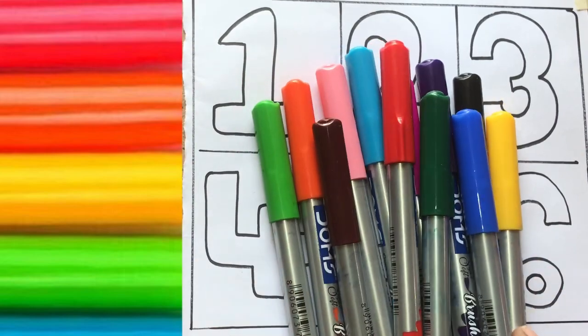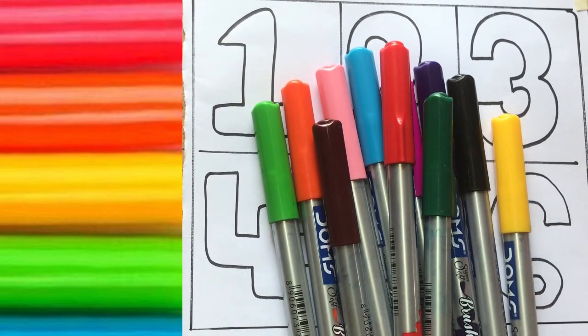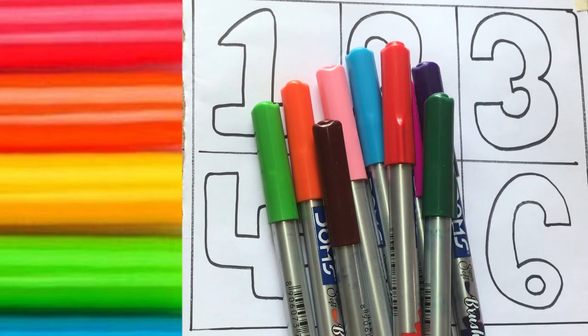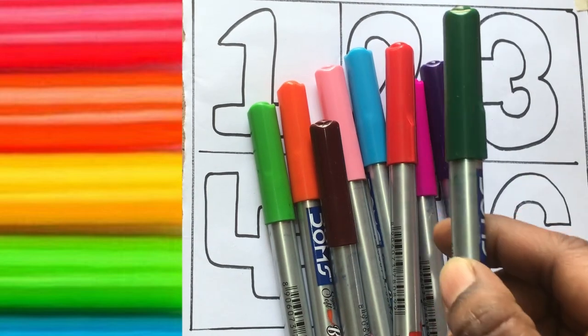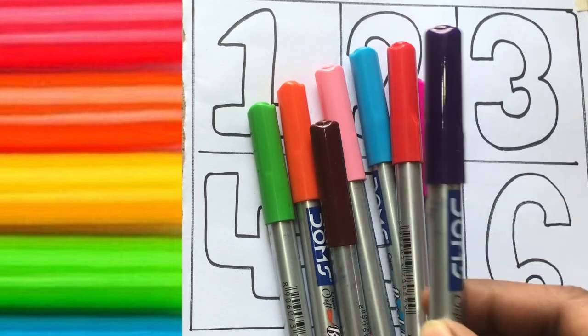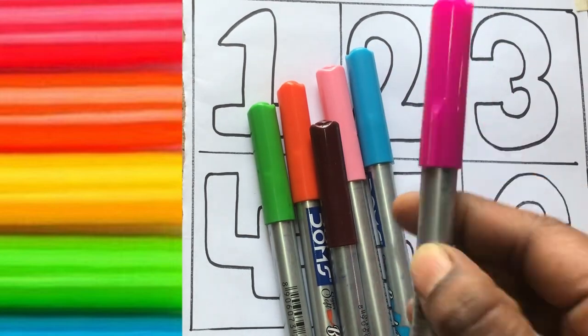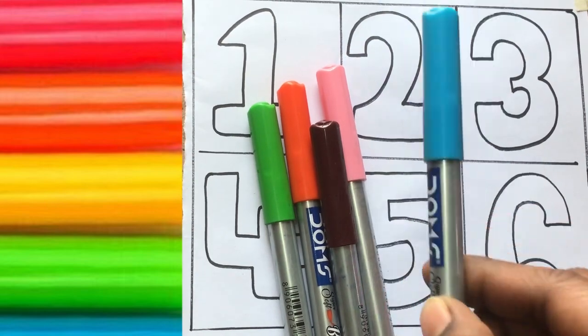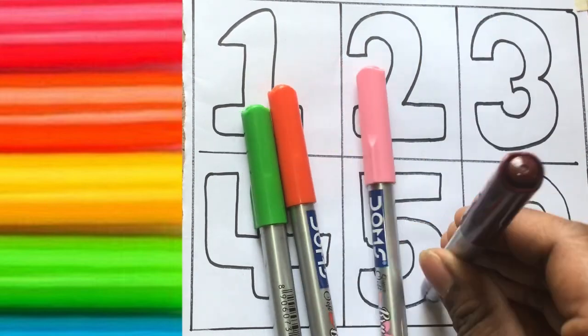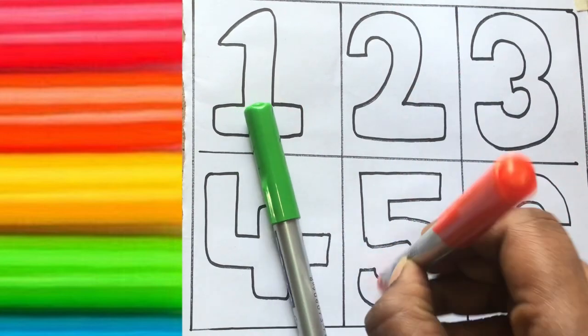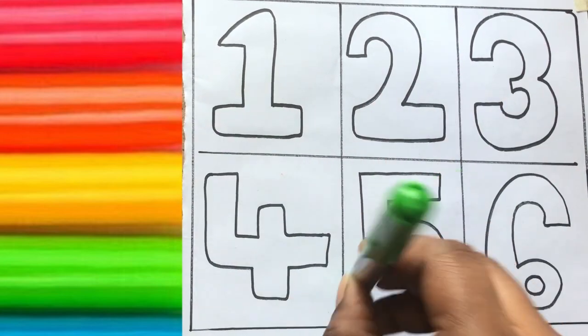all the color pencils. Let's learn the names. Blue color, Yellow color, Black color, Green color, Violet color, Red color, Red pink color, Brown color, Pink color, Orange color, and green color.